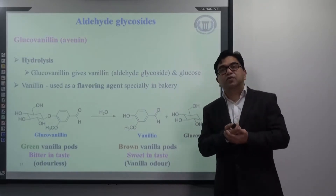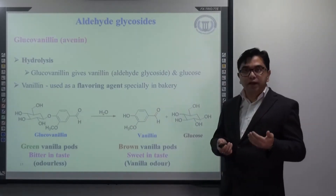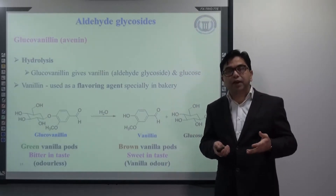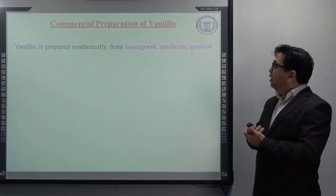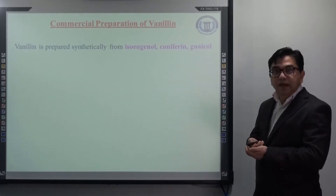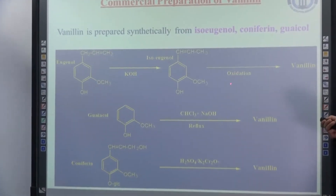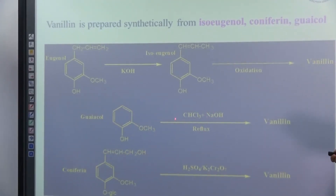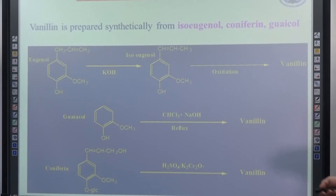The most important use of vanillin is as a flavoring agent, especially in bakery and food items like ice cream and cookies. It is also added to many medicine syrups, especially those made for children. Regarding the commercial preparation of vanillin, it is mainly prepared synthetically from eugenol, coniferin, and guaiacol. Eugenol, when treated with KOH followed by oxidation, gives vanillin. Guaiacol, upon reflux with sodium hydroxide in the presence of chloroform, also results in vanillin formation. Coniferin, when treated with potassium dichromate in the presence of H2SO4, also results in the formation of vanillin.